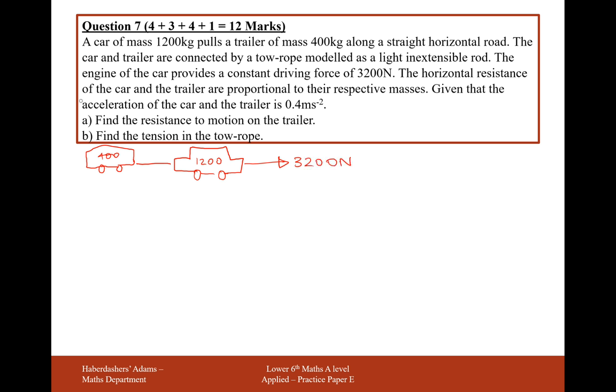The engine of the car provides a constant force of 3,200 newtons, so I'll add that to my diagram. The horizontal resistance of the car and the trailer are proportional to their respective masses. So we're going to have some drag force on both the car and the trailer, and this is going to be proportional to their masses. Given that the acceleration of the car is 0.4 meters per second squared, find the resistance to motion of the trailer.